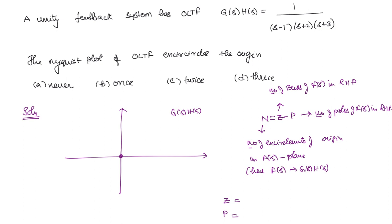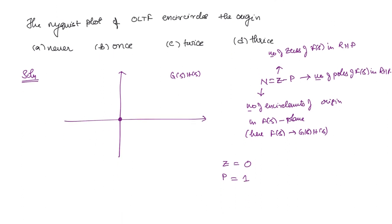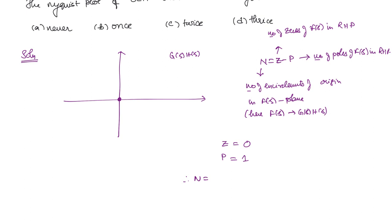There are no zeros of GH, so Z = 0. There are three poles, but only one in the right half of the s-plane: s = 1. So P = 1. Therefore N = Z − P = 0 − 1 = −1. The origin is encircled once in the counter-clockwise direction. Since the question asks for the magnitude of encirclements, the answer is 1, which corresponds to option B.